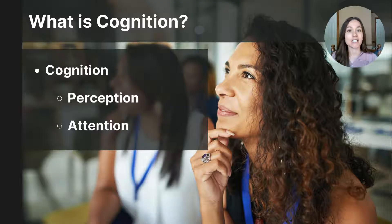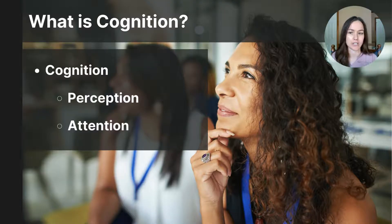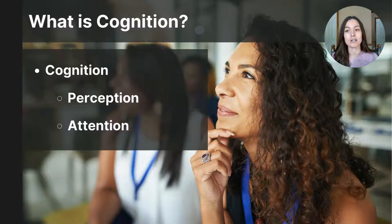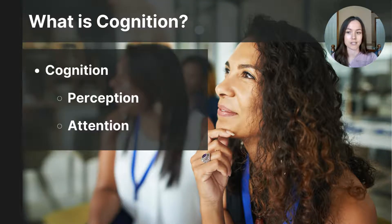In psychology, cognition encompasses all of the mental processes involved with acquiring knowledge and understanding. These include things like thinking, memory, problem-solving, decision-making, creativity, intelligence, perception, and attention. In this video, I will focus on two elements of cognition: perception and attention.